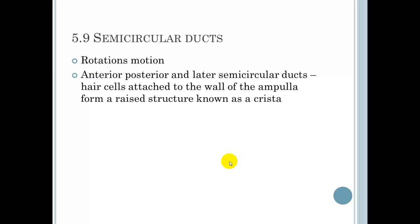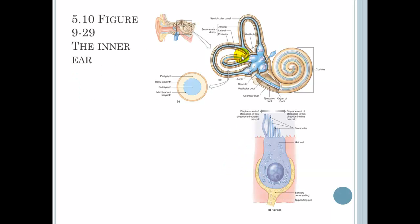Semicircular ducts. Rotations, motion. This is what these kind of cover. Anterior, posterior, and lateral semicircular ducts. There's hair cells that are attached to the walls of the ampulla. Form a raised structure known as a crista.